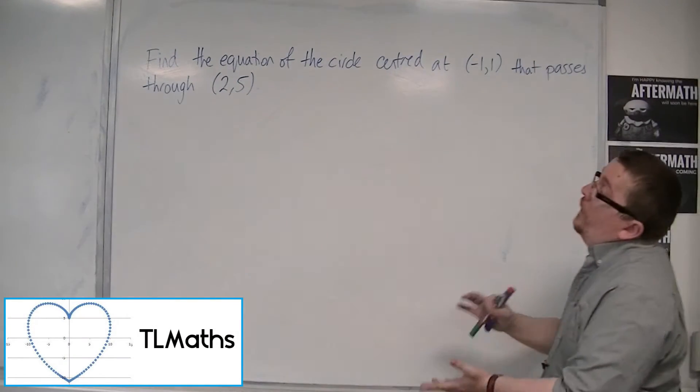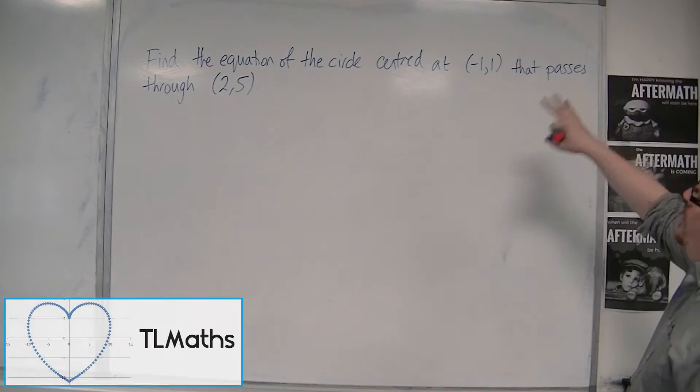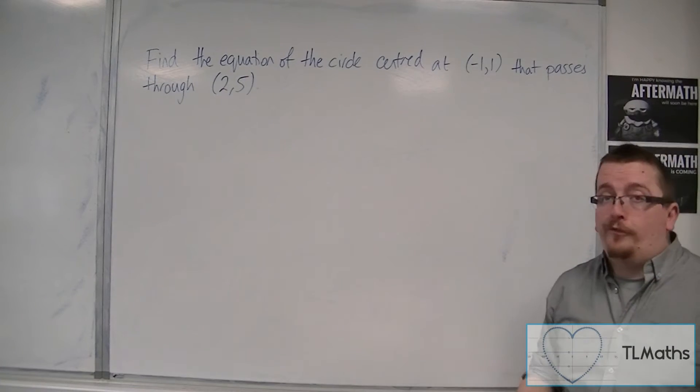In this problem, we want to find the equation of the circle centered at (-1, 1) that passes through the point (2, 5).